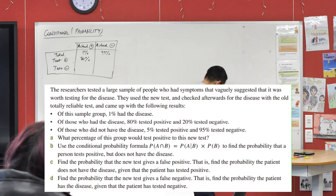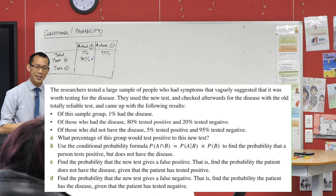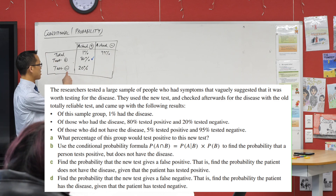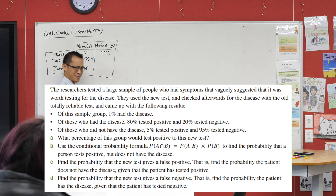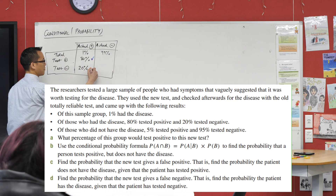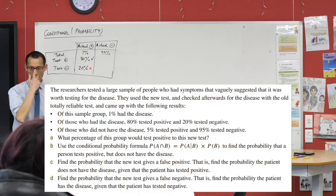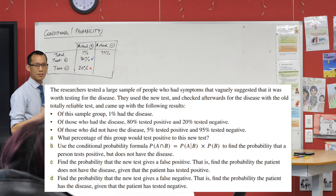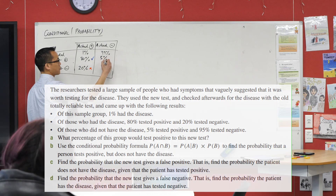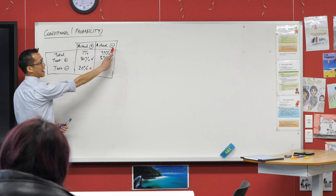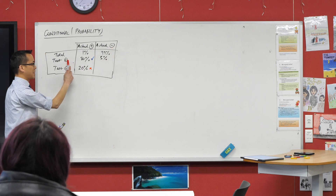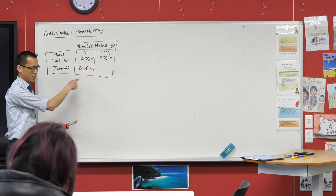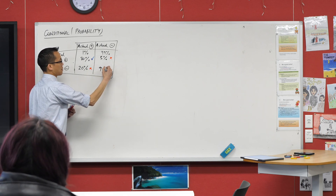I'll put a tick here — this is where the test gets it right. But that means 20% of the time it gets it wrong: it tells you that you're negative, but you actually are sick. So I'll put a cross there — that's bad. What about the people who aren't sick? The people who are actually negative — what percentage of them get told they're positive? 5%. That's pretty small, but it's a mismatch: they're actually healthy but get told they're sick. The bad numbers are small, but some are still quite considerable. And then obviously that leaves 95% over here.